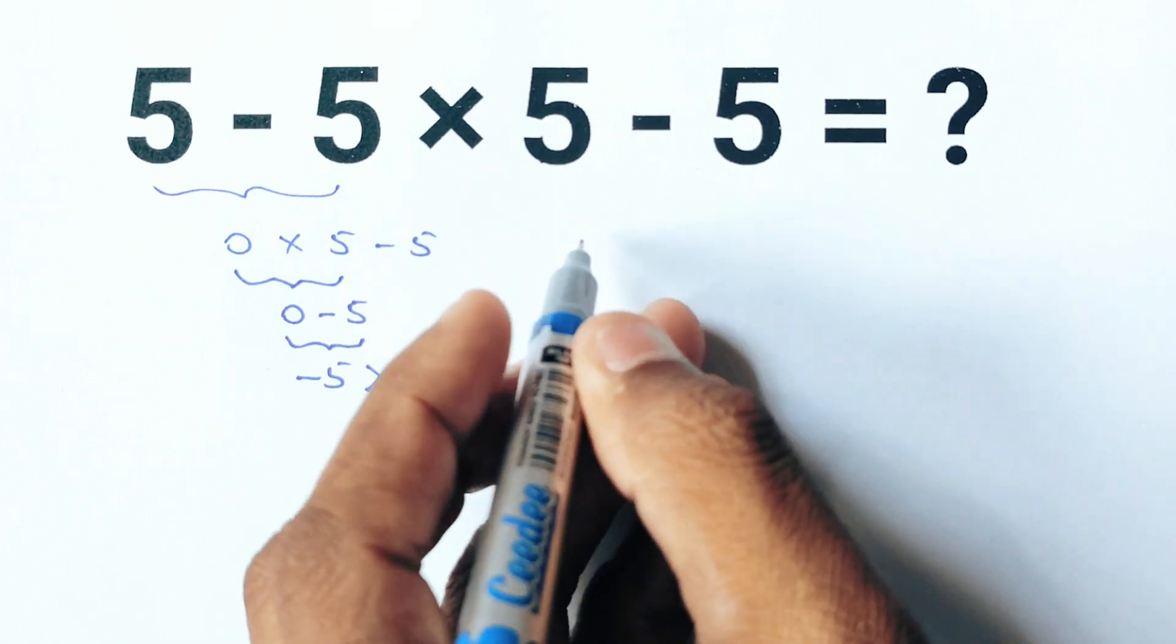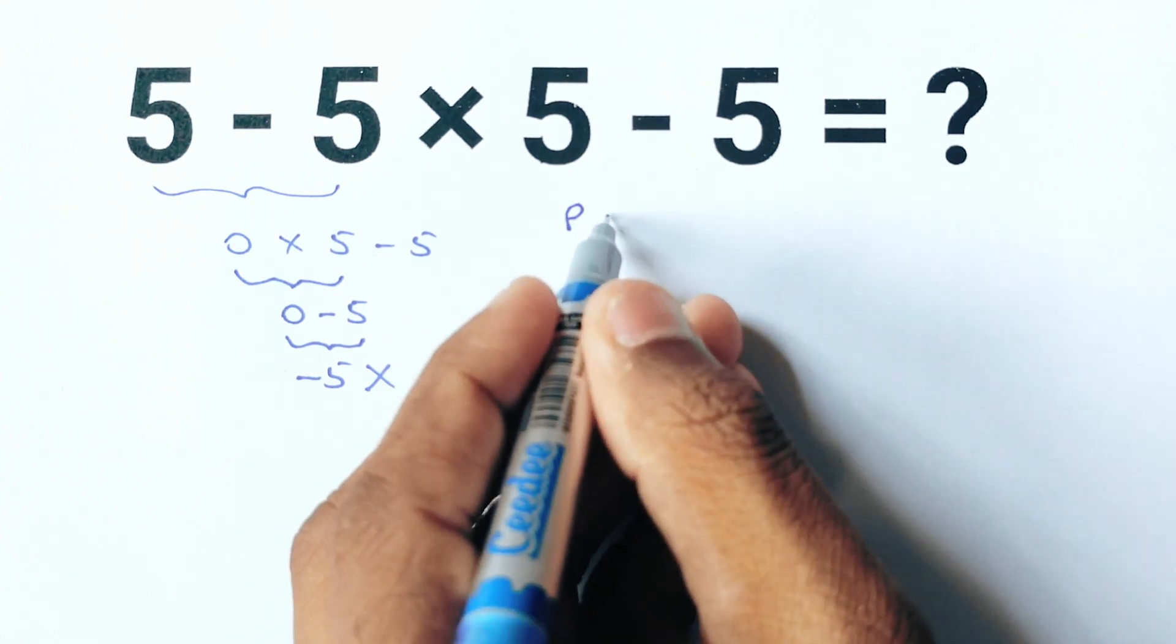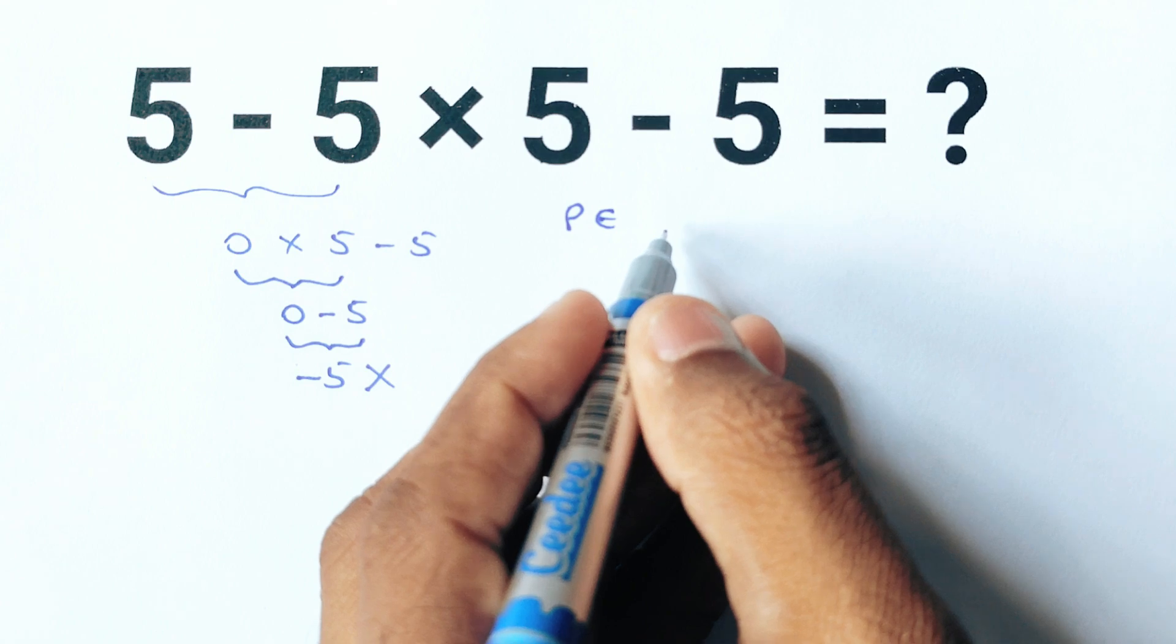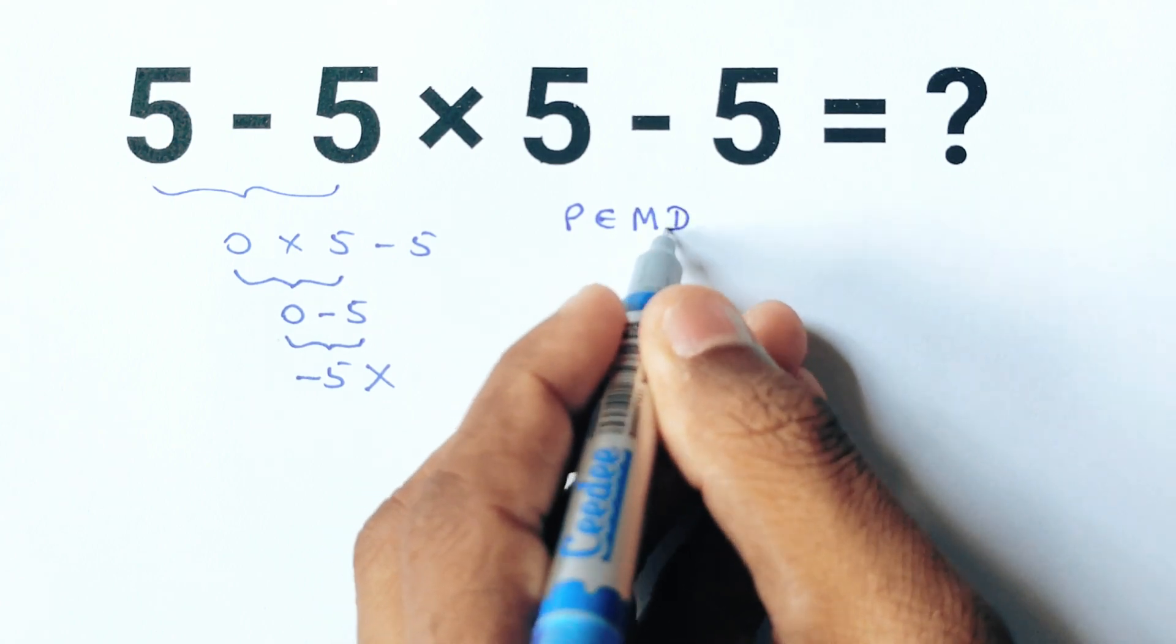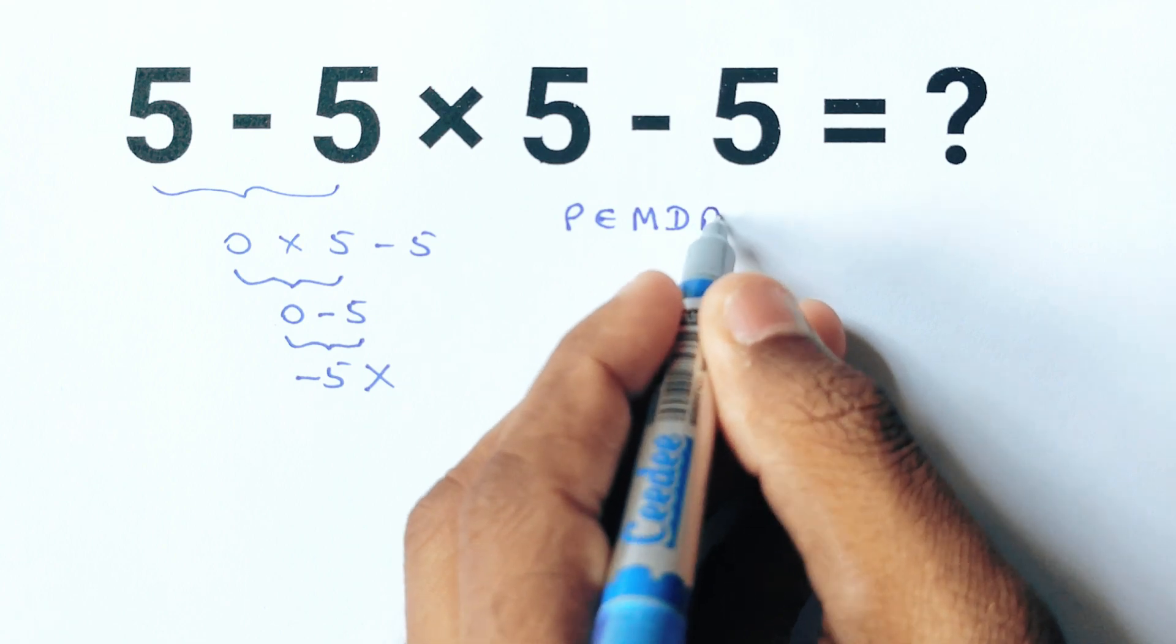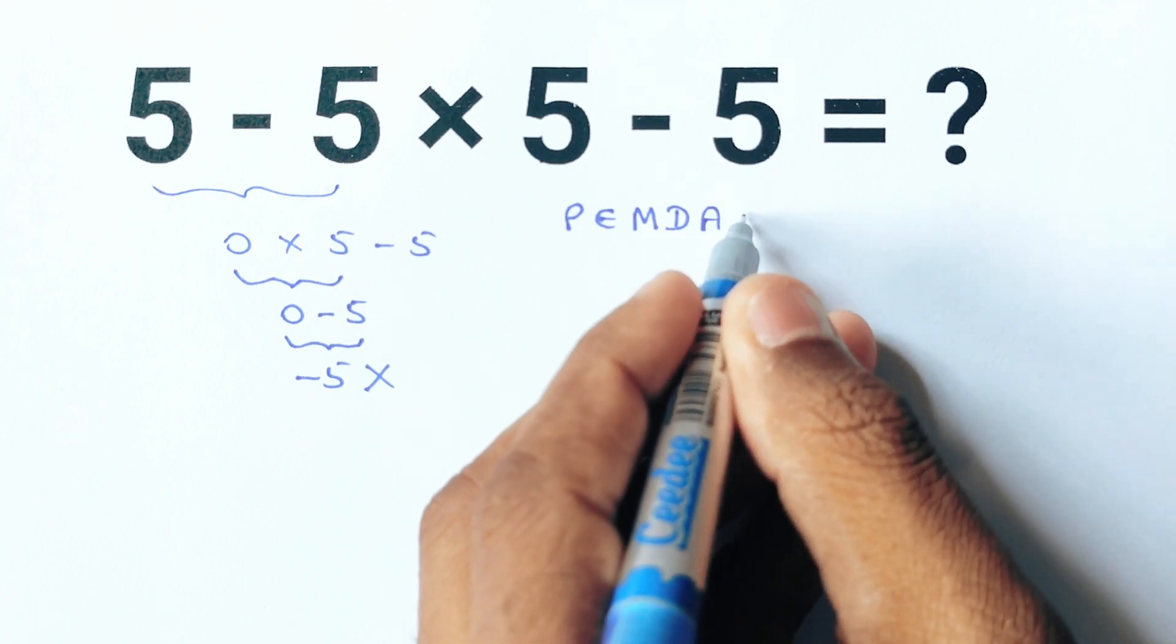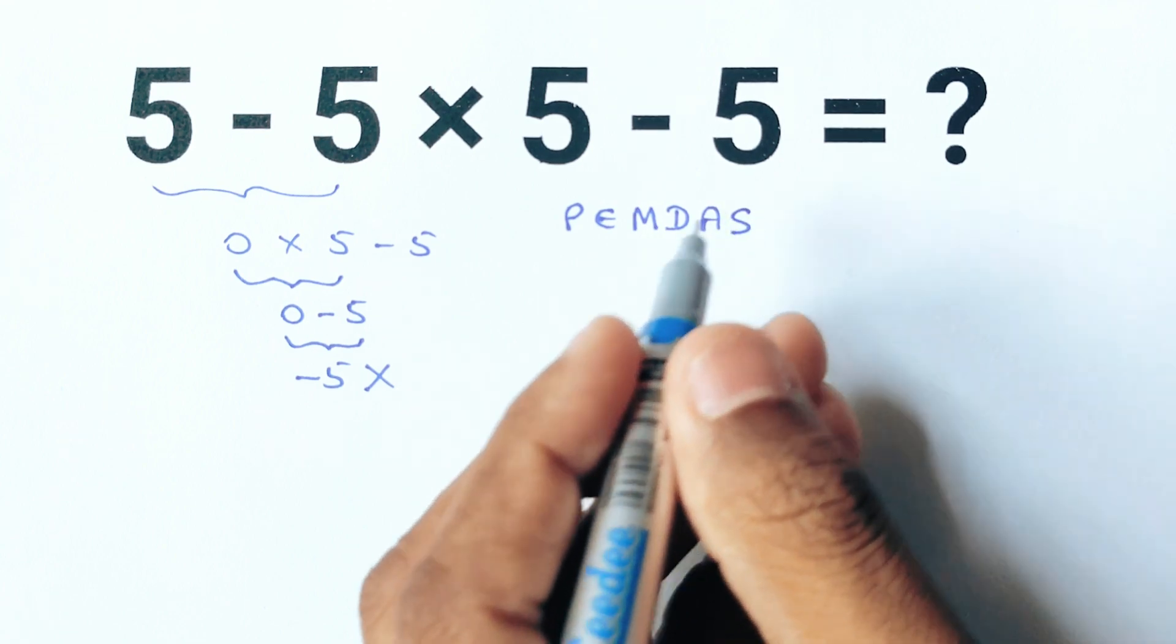In PEMDAS, P stands for parenthesis, E stands for exponents, M stands for multiplication, D stands for division, A stands for addition, and S stands for subtraction.